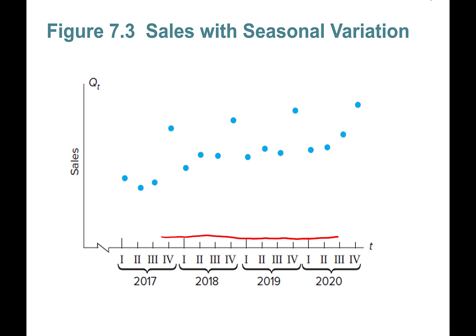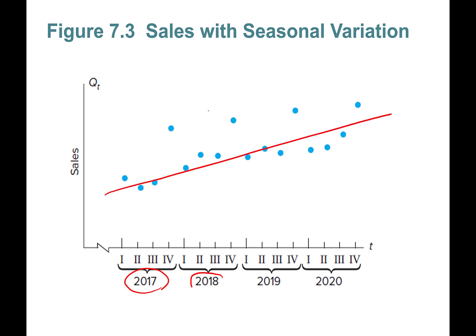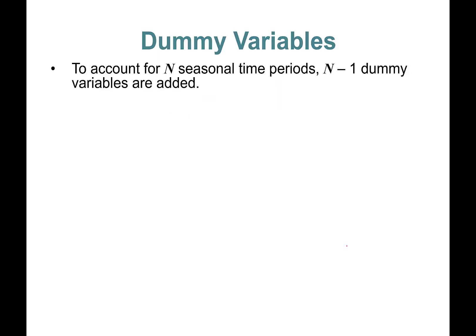Here's an example showing sales with seasonal variation across first, second, third, and fourth quarters from 2017 onward. As you can see, there is an upward trend overall; however, the fourth quarters are always notably higher than the other quarters.